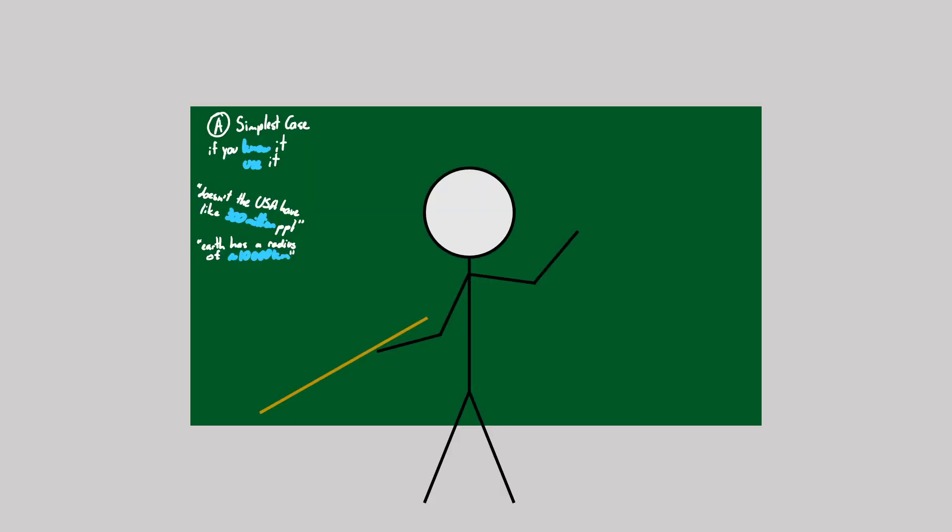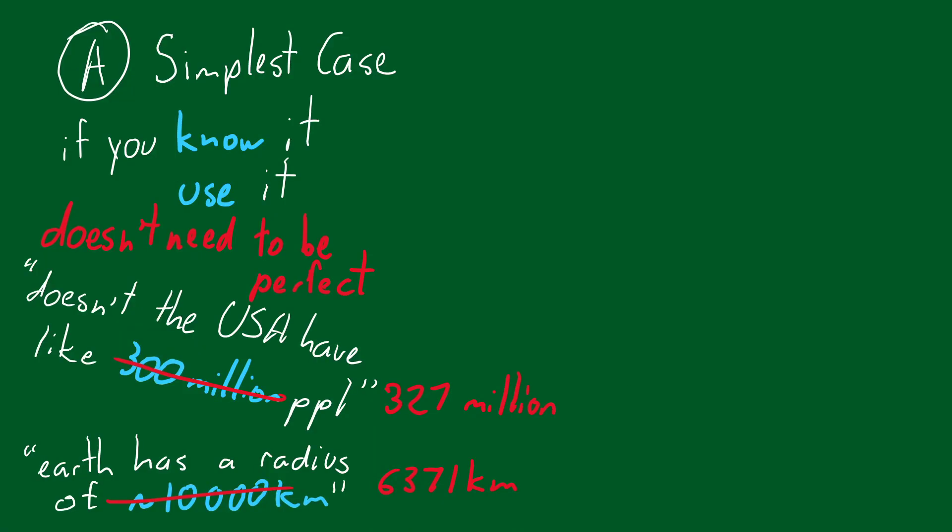Sometimes, something can be effortlessly measured on the spot with some precision, like the width of a room. Remember that, since the end goal is a general idea of magnitude, it's not necessary to know all the details of your answer.